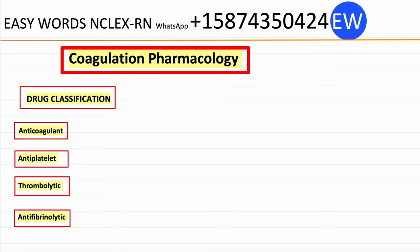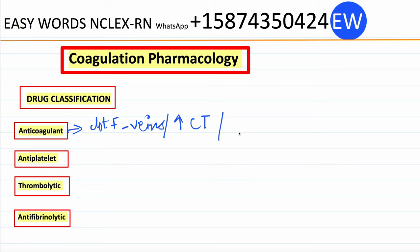Pharmacology drug classification. First we have anticoagulants. Anticoagulants prevent clot formation especially in the veins. They increase the clotting time and also prevent the clot from increasing in size by inhibiting certain clotting factors.